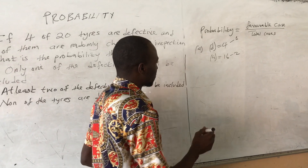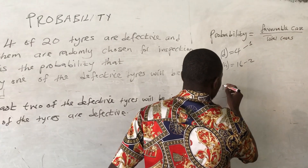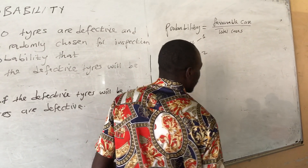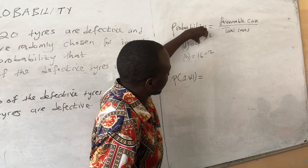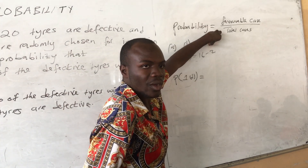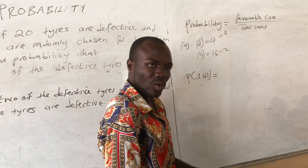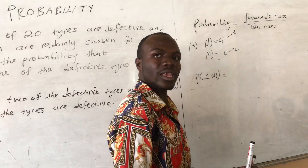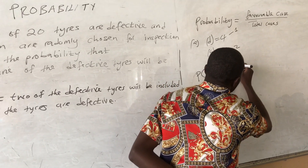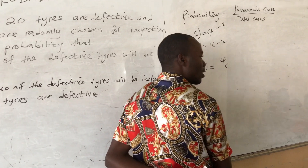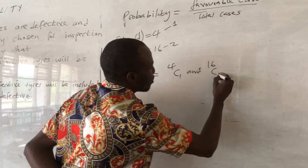Since we know that probability equals favorable cases over total cases, the probability of choosing only 1 defective will be equal to 4 choose 1 times 16 choose 2, divided by 20 choose 3. This uses combinations — 4 choose 1 means we're selecting 1 from the 4 defective tires, and 16 choose 2 means selecting 2 from the 16 good ones.